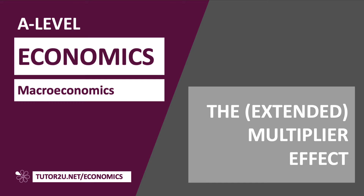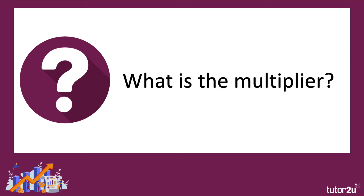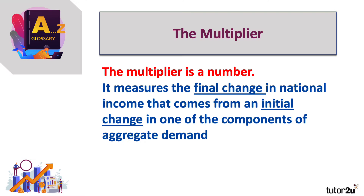Let's spend a few minutes together thinking about the extended multiplier effect. A reminder that the multiplier is just a number — it's the difference between the final change in national income against the initial change in AD. So it's the ratio of the final change in GDP divided by a change in investment, exports, or government spending — one of those components of demand changes.